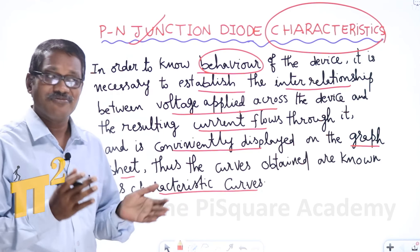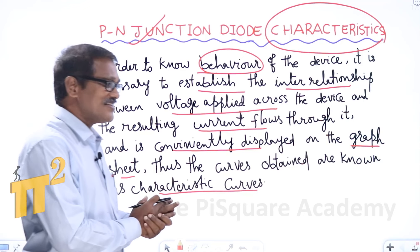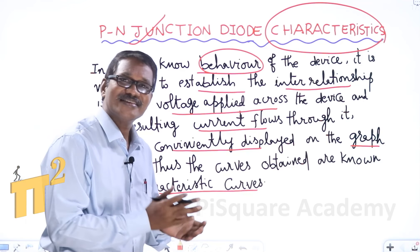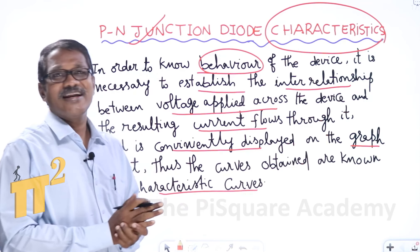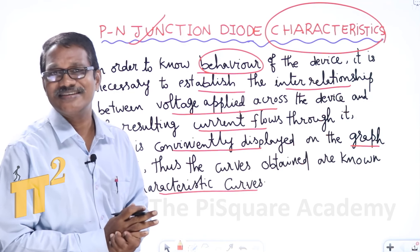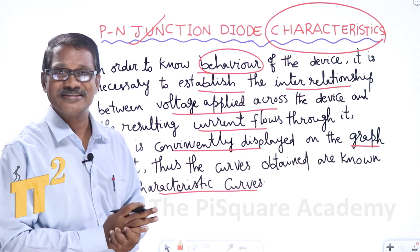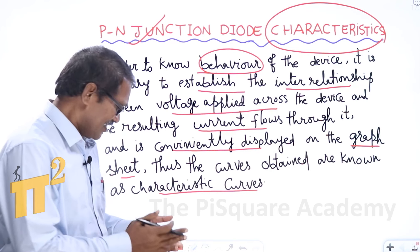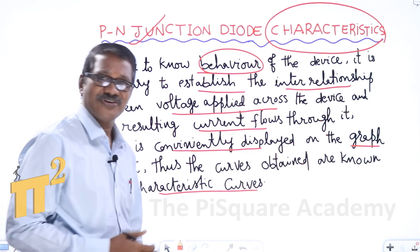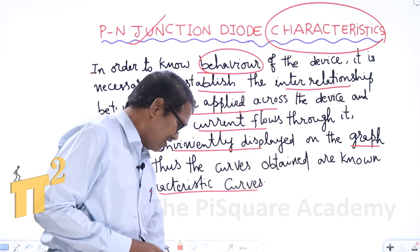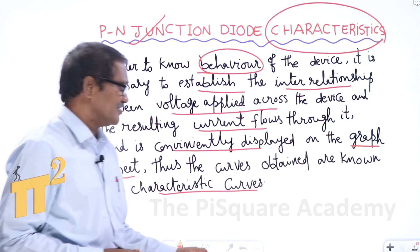P-N junction diode V-A characteristics can be observed under two different cases: one is under forward biased conditions and the second one is reverse biased conditions. Let us discuss first under forward biased conditions.